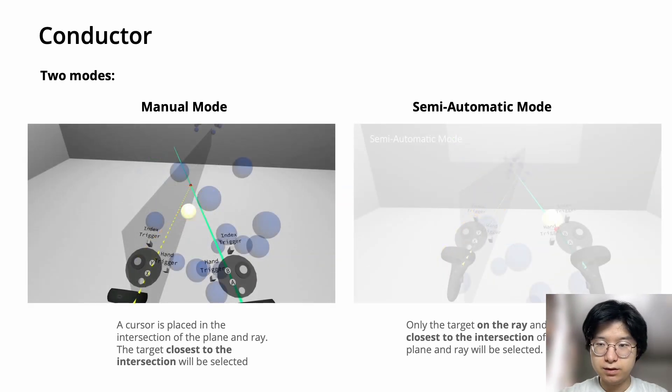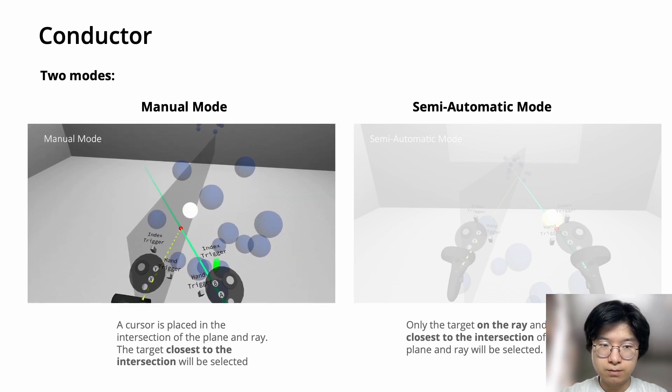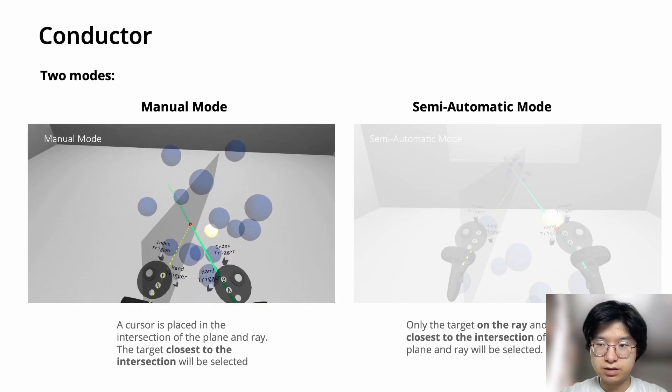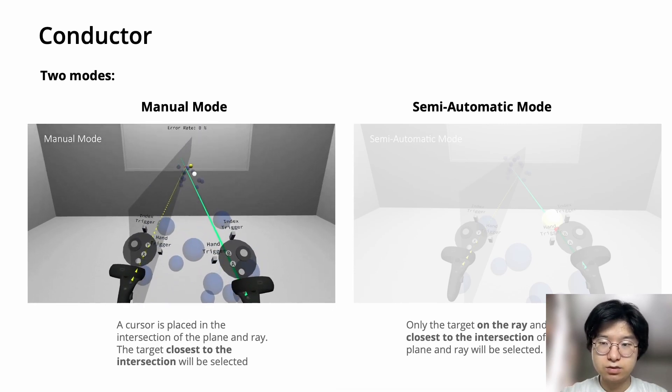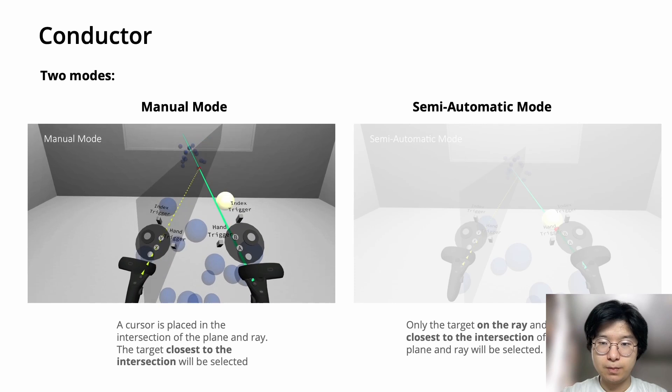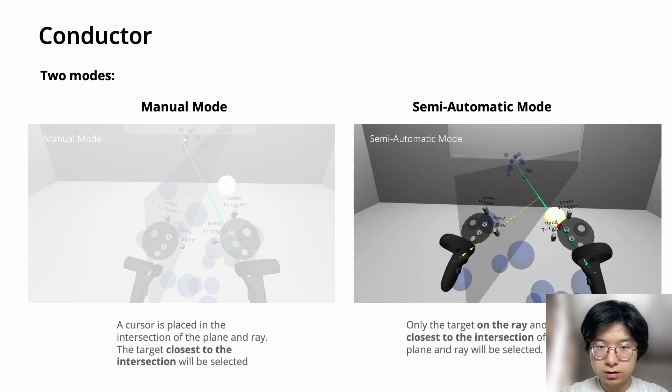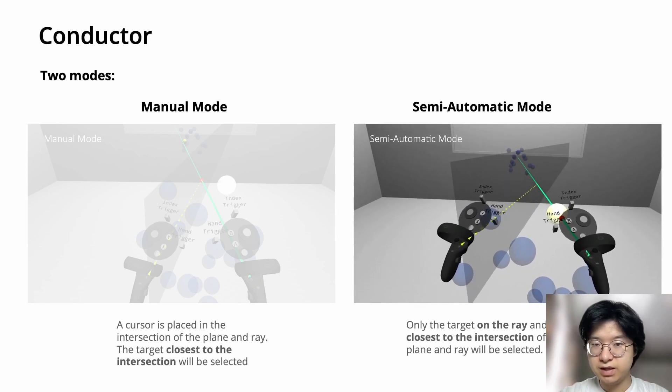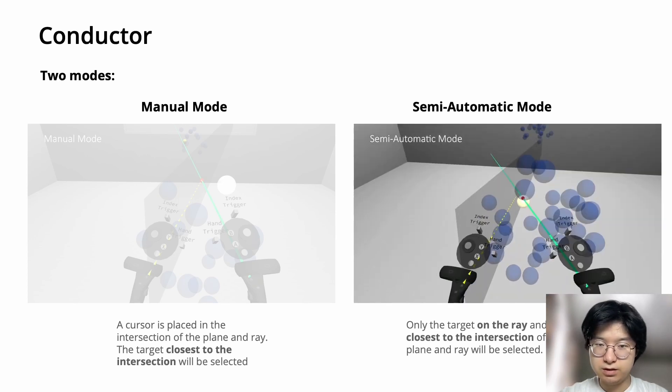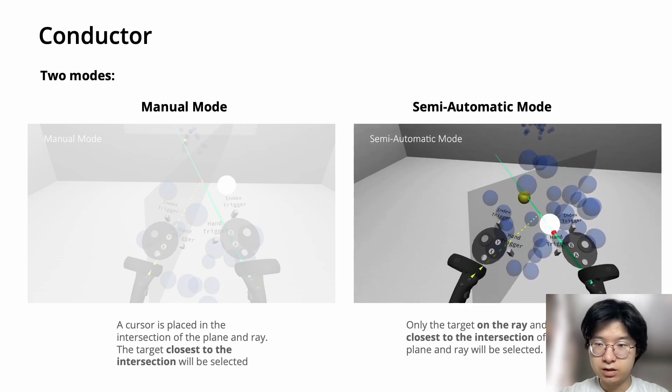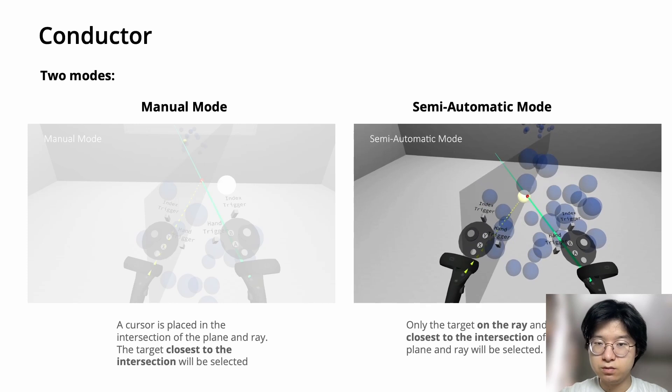There are videos of these two modes. We can see that the cursor for manual mode is placed right at the intersection, and the target closest to the cursor will be selected. For semi-automatic mode, only the target on the ray will be selected. We can see that there are two targets on the ray, but only the one closest to the intersection will be selected.